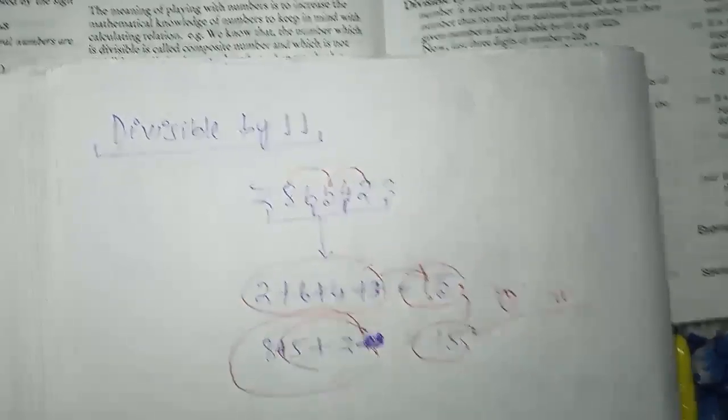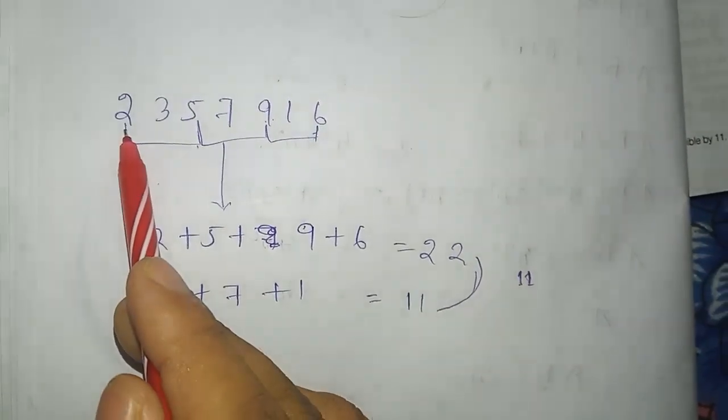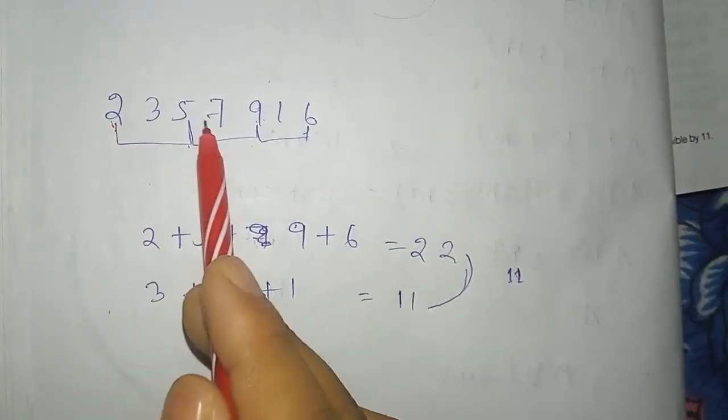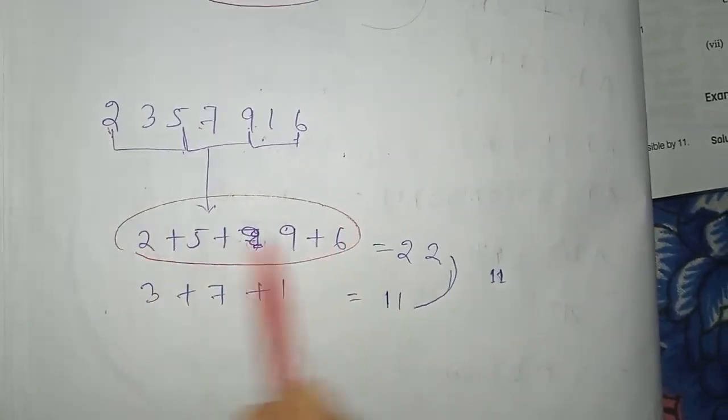Let's look at our example. Let's check this number. First, let's check the alternate digits: 2 plus 5 plus 9 plus 6. How many times? 22.